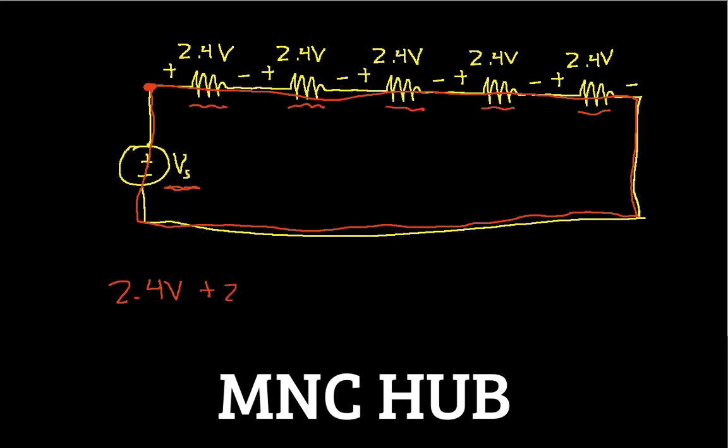Plus another 2.4, plus a third 2.4, plus a fourth 2.4, plus a fifth 2.4. Then I have a minus Vs, that's negative, because I'm going from a lower potential to a higher potential in the source. And this is all equal to zero.